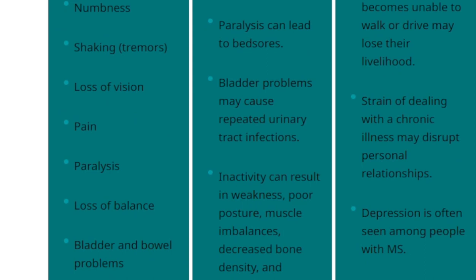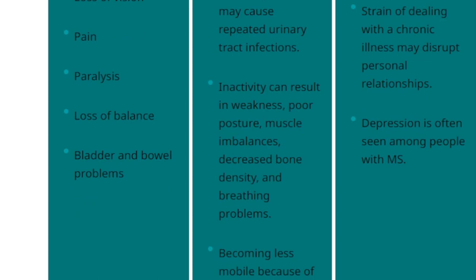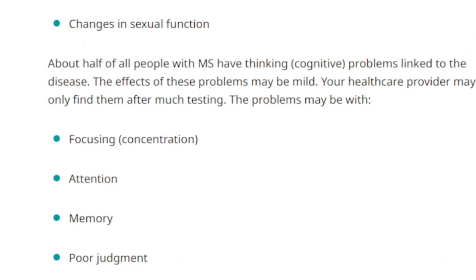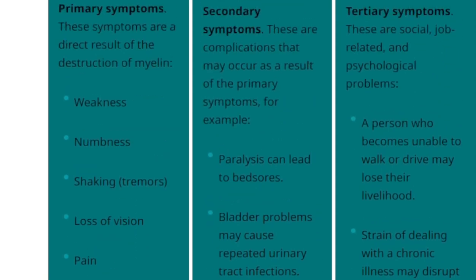Secondary symptoms include: paralysis can lead to bed sores; bladder problems may cause repetitive urinary tract infections; inactivity can result in weakness, poor posture, muscle imbalance, and decreased bone density; breathing problems — becoming less mobile because of weakness and trouble swallowing can lead to a greater risk of pneumonia. The tertiary symptoms affect social, job-related, and psychological areas: a person unable to walk or drive may lose their livelihood, strain of dealing with a chronic illness may disrupt personal relationships, and depression is often seen among people with MS.